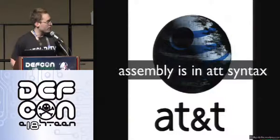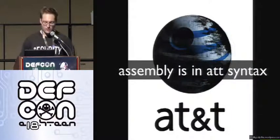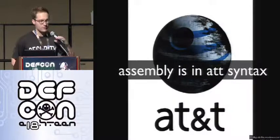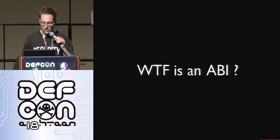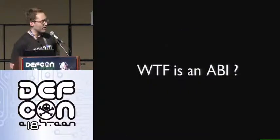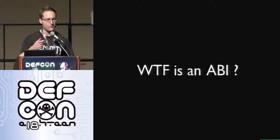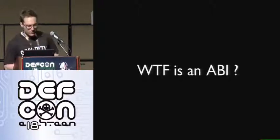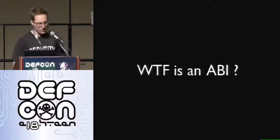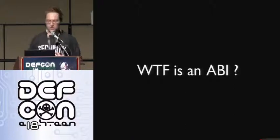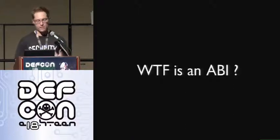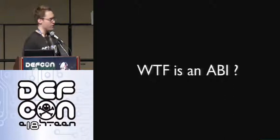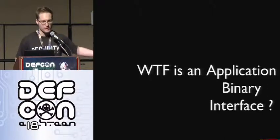Just a quick note before we get rolling: there's a lot of assembly code in this talk and it will all be in AT&T syntax. So to actually do this we need to know a few things. We need to know about the ABI for the system we're working on. The question we need to start with is: what the fuck's an ABI? An ABI is an application binary interface.